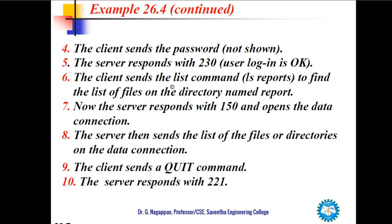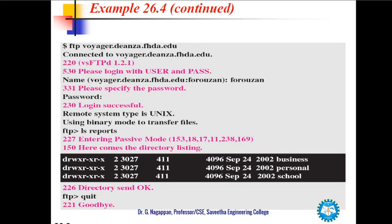The client sends the LIST command to find the list of files in the directory named 'report.' The server responds with 150 and opens the data connection. The remote system type is Unix, using binary mode to transfer files. The 'ls reports' command is sent with 227 entering passive mode. The server goes to passive mode, and 150 'here comes the directory listing' shows the directory is being listed. After data transfer, 226 'directory sent OK' is returned.